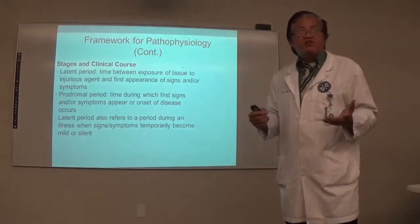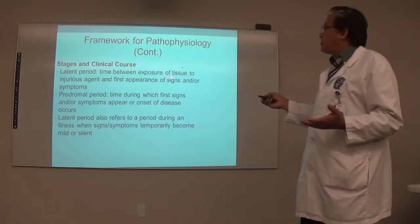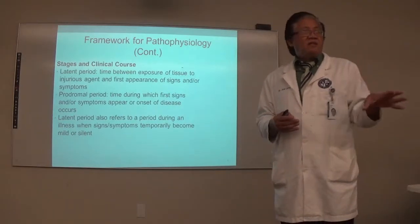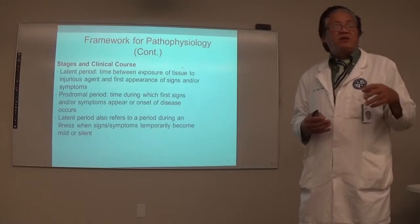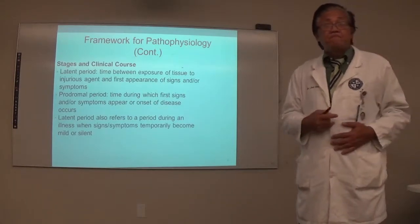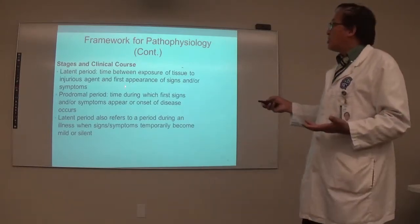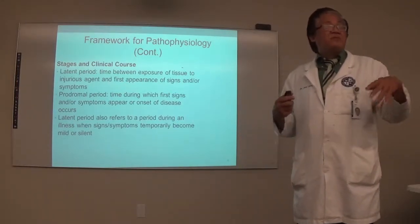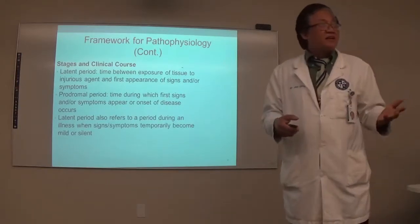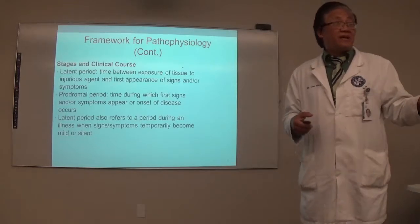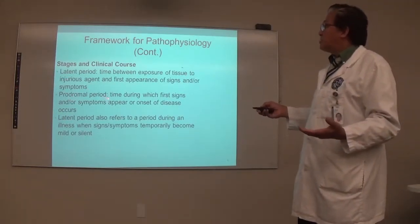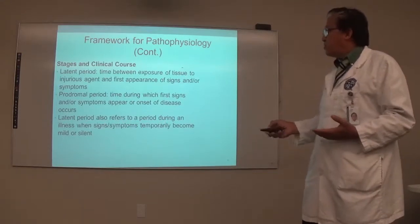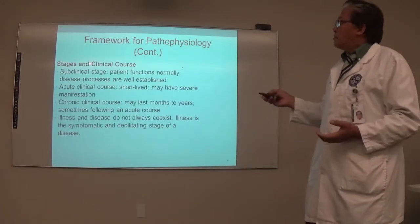The stages of clinical course: the latent period is common among infections — the time between exposure to the injurious agent and the first appearance of signs and symptoms. For example, if someone sick is coughing in class, transmission can occur. It takes time for signs and symptoms to appear. The prodromal period is the time during which the first signs and symptoms appear at the onset of disease.